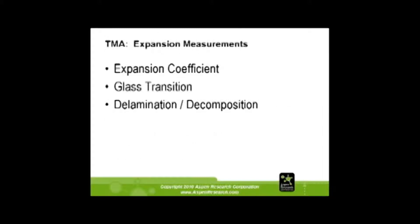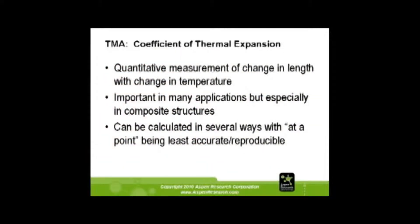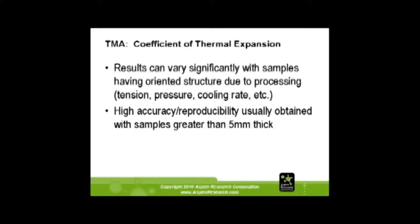With expansion measurements, you can detect glass transition, delamination, and decomposition. The coefficient of thermal expansion measures the change in length with change in temperature. The best way to measure it is over a wide temperature range — say 20 to 40 degrees. If you measure at a single point, your numbers are not very accurate.